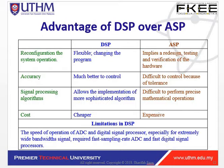The first advantage is reconfiguration — the system operation of digital signal processing is more flexible. It is more accurate in terms of control, and allows the implementation of more sophisticated algorithms. The cost is cheaper. For analog signal processing, modifications require hardware changes, it is difficult to control because of tolerance, difficult to perform precise mathematical operations, and the cost is expensive. This is the difference between DSP and ASP.